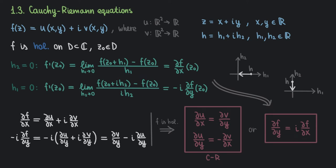These equations are called the Cauchy-Riemann equations, and this is our first result that is a consequence of holomorphicity.